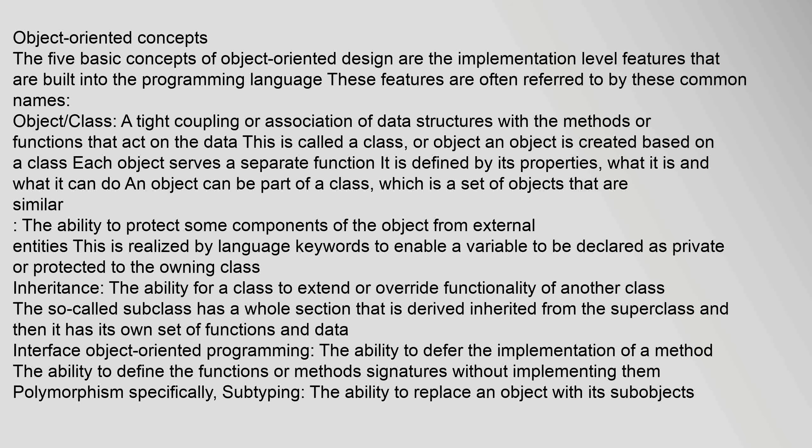An object can be part of a class, which is a set of objects that are similar. Encapsulation: the ability to protect some components of the object from external entities, realized by language keywords to enable a variable to be declared as private or protected to the owning class. Inheritance: the ability for a class to extend or override functionality of another class. The subclass inherits from the superclass and then has its own set of functions and data.